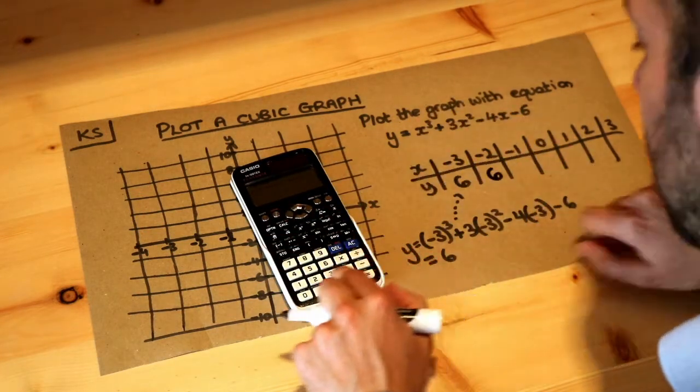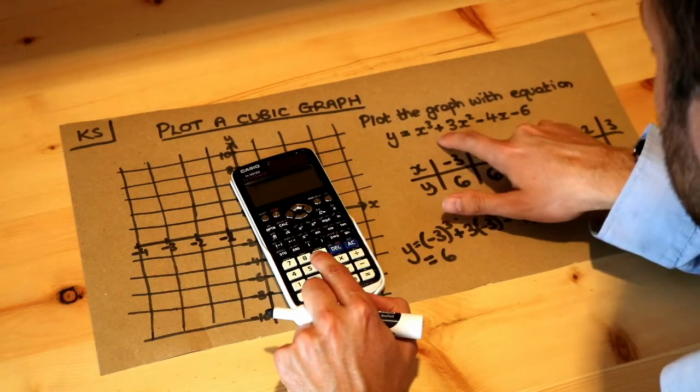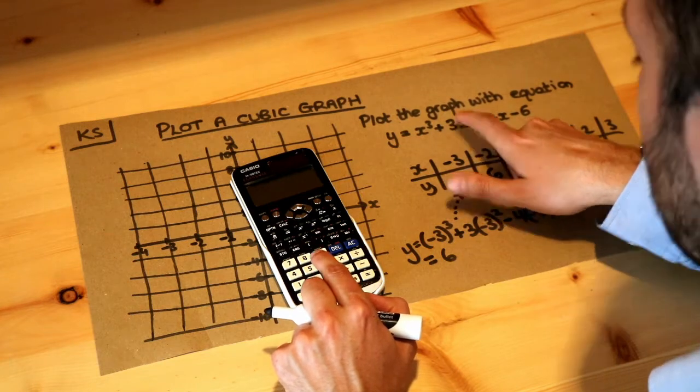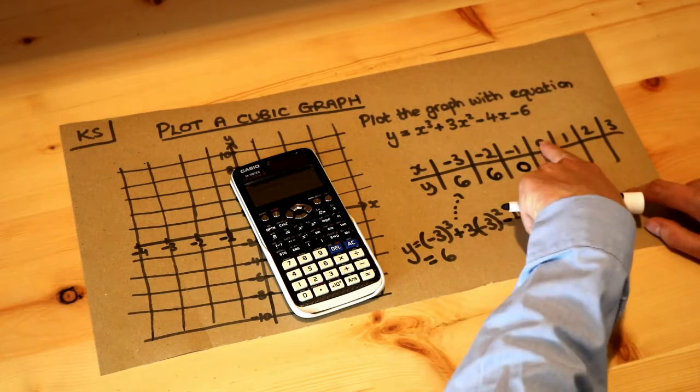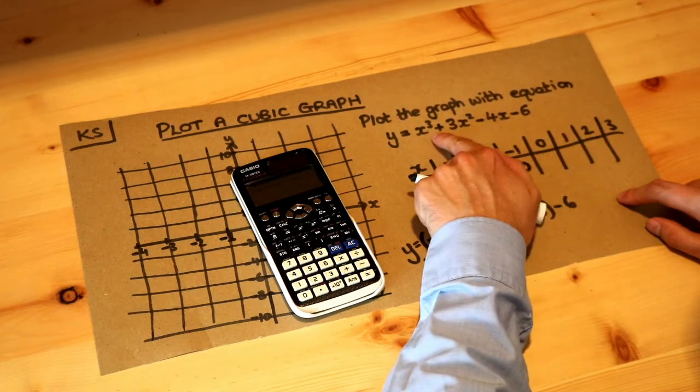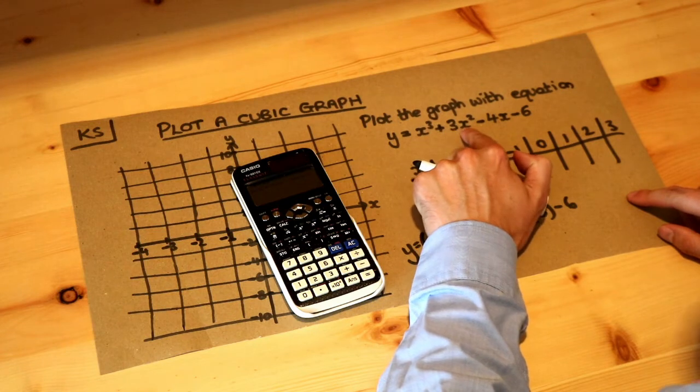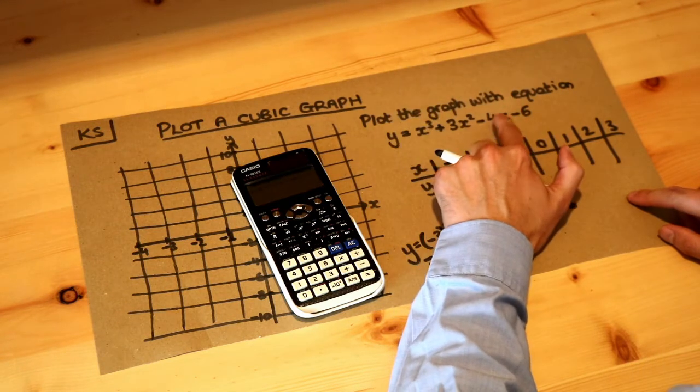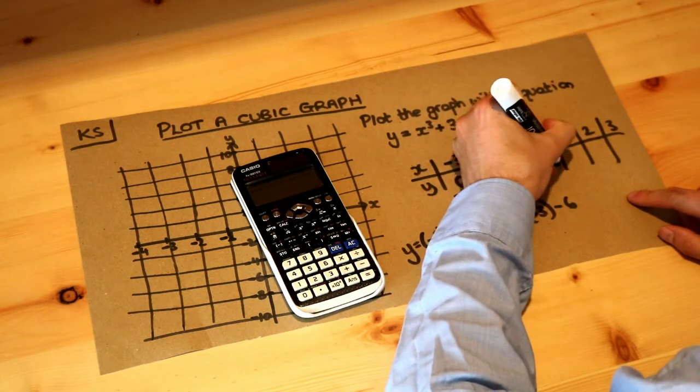Then what about minus 1? If I substitute minus 1 into this expression, so minus 1 cubed plus 3 minus 1 squared, etc., I get 0. Now when I sub in 0 into this expression, well this one's a bit easy you can do it in your head because 0 cubed is 0, 3 times 0 squared is still 0, minus 4 times 0 is still 0 minus 6, and we get minus 6.